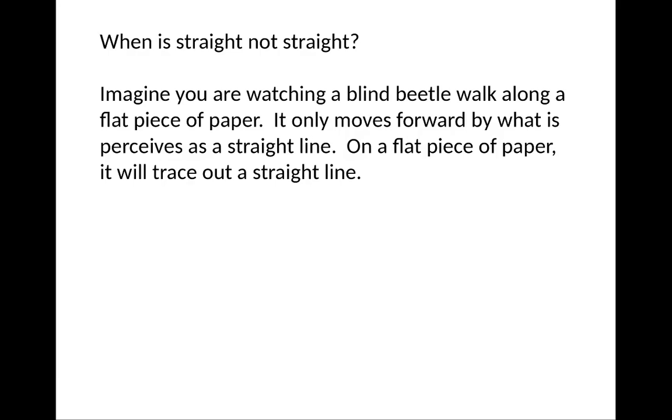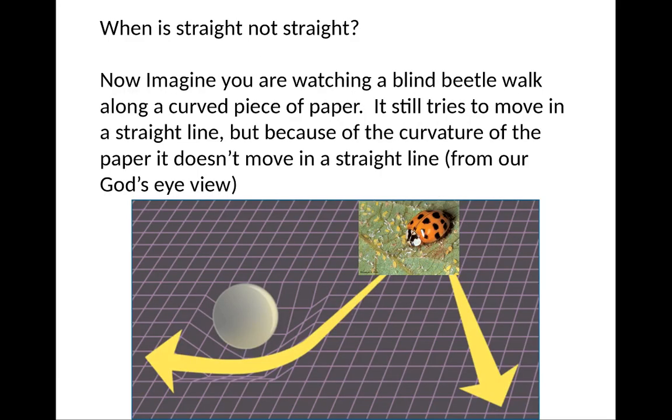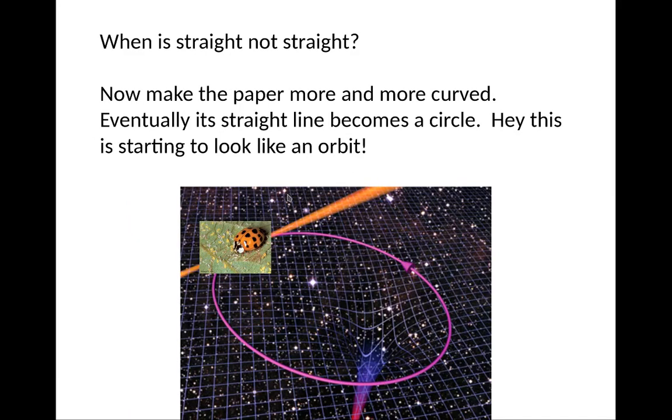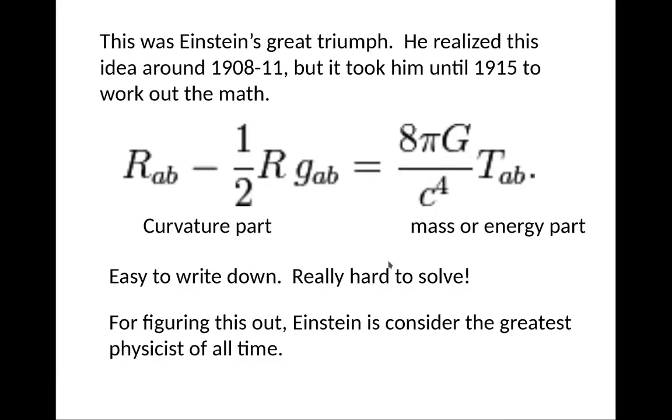So when is straight not straight? So let's imagine you have a beetle. We'll make a blind beetle to be able to know which way it's going, and it walks along a flat piece of paper. It only moves forward, but what it perceives is a straight line. On a flat piece of paper, it'll trace out a straight line. There's my beetle, a flat piece of paper, a straight line. Now, if it walks along a curved piece of paper, then it will move along what it thinks is a straight line, but in fact it doesn't. If you zoom out, what you see is that it's moving along a curve. From your basically God's eye view. And if it's really curved, then essentially what will happen, the beetle will actually just move along and along in a circle. So this is starting to look like an orbit.